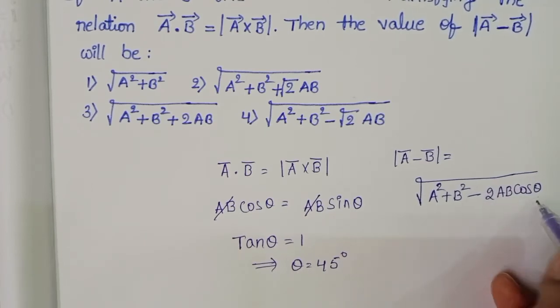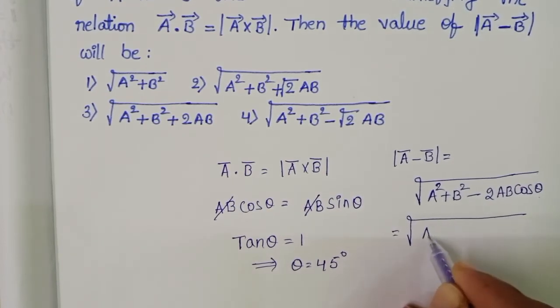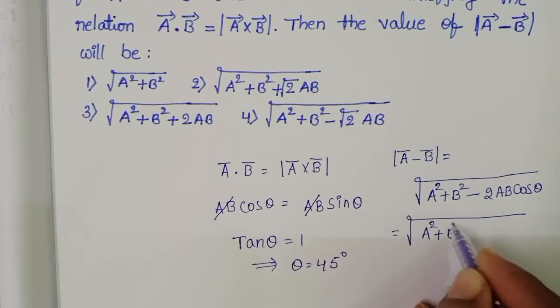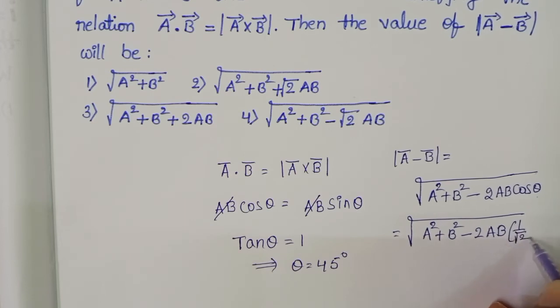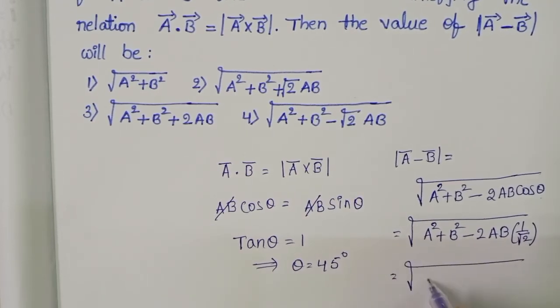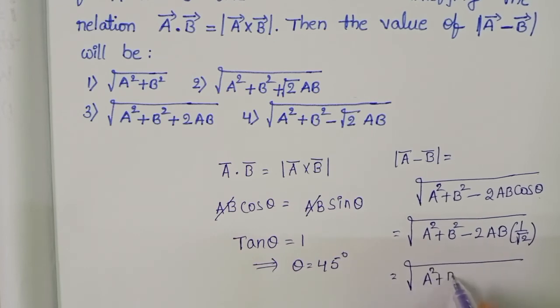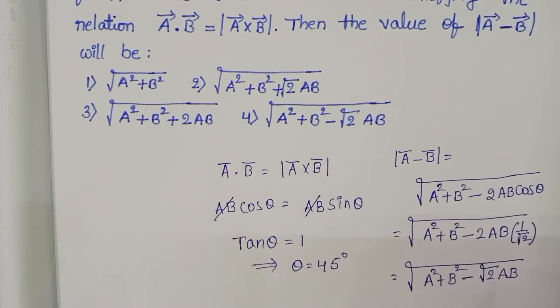And here theta equals 45 degrees. Cos 45 value is 1 by root 2. So that equals square root of A square plus B square minus root 2 times 2AB. To simplify, 2 by root 2 equals root 2, so it's square root of A square plus B square minus root 2 AB.